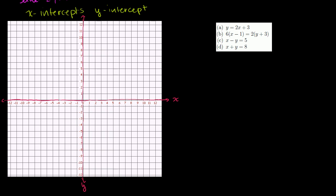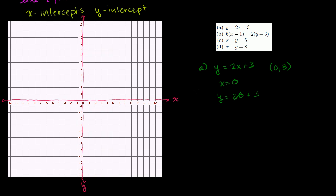Let me show you what I mean by x and y intercepts. For Part A, we have the equation y = 2x + 3. First, let's think about what happens when x = 0. When x = 0, y = 2 times 0 plus 3, which is 0 + 3, so y = 3. So the point (0, 3) satisfies this equation and sits on the line.